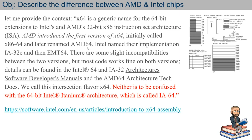What AMD did is initially call this x86-64, but they later renamed it to AMD64. Intel named their implementation IA32E, then EMT64. Notably, there are some slight incompatibilities between the two versions, but most code works fine on both. You can find details by reading the architecture software developers' manuals for Intel — I have a video series on that. You can also find AMD's version, which they call 'Architecture Tech Docs.'